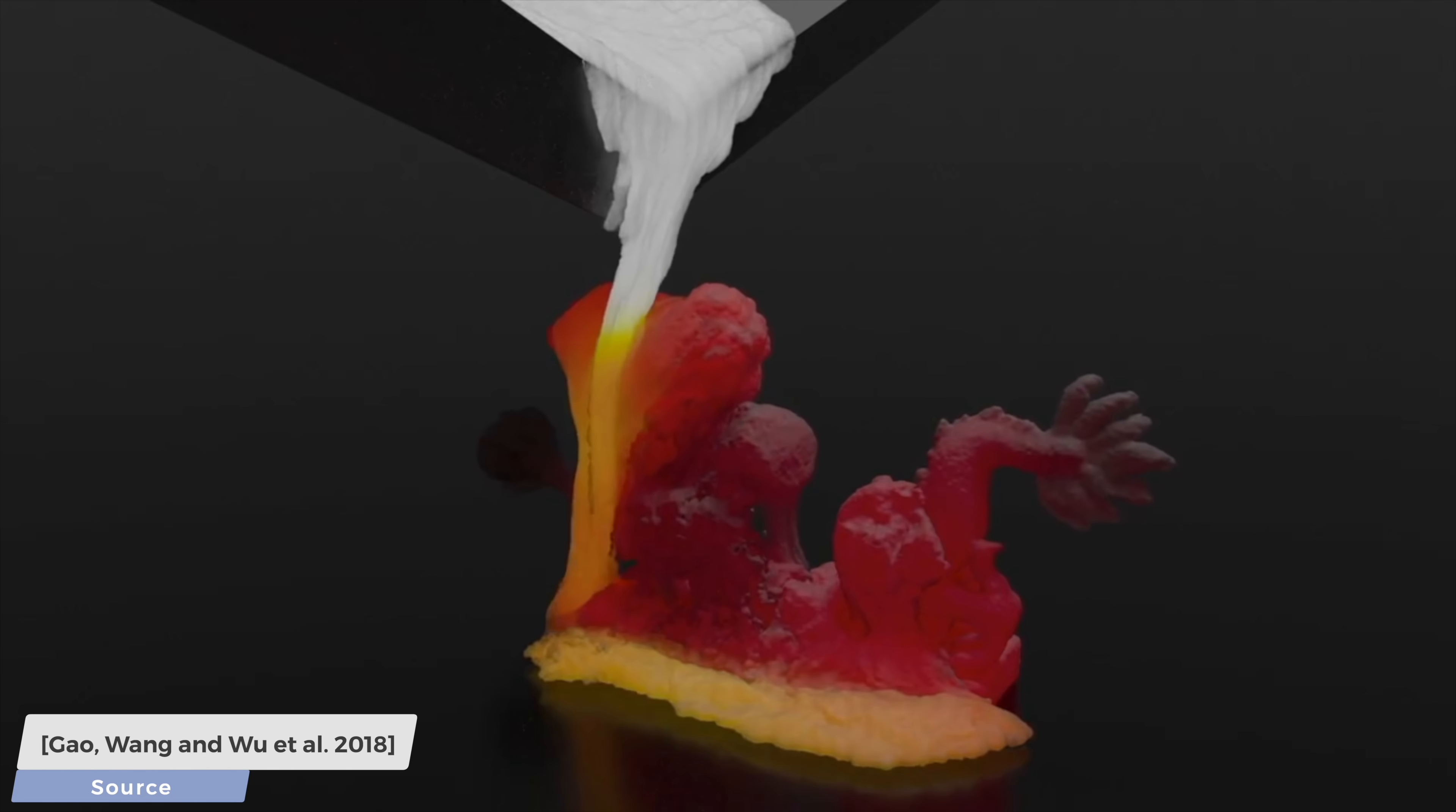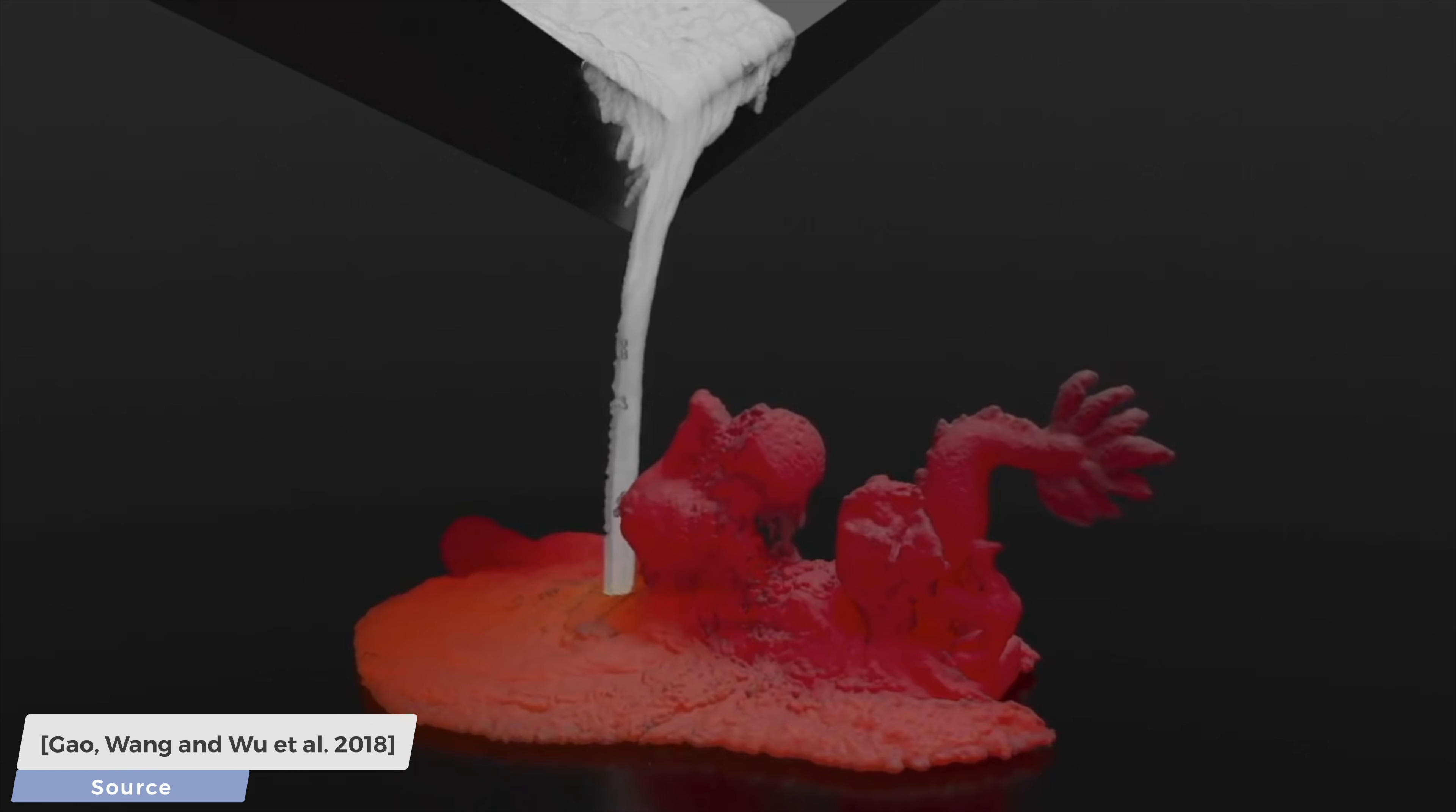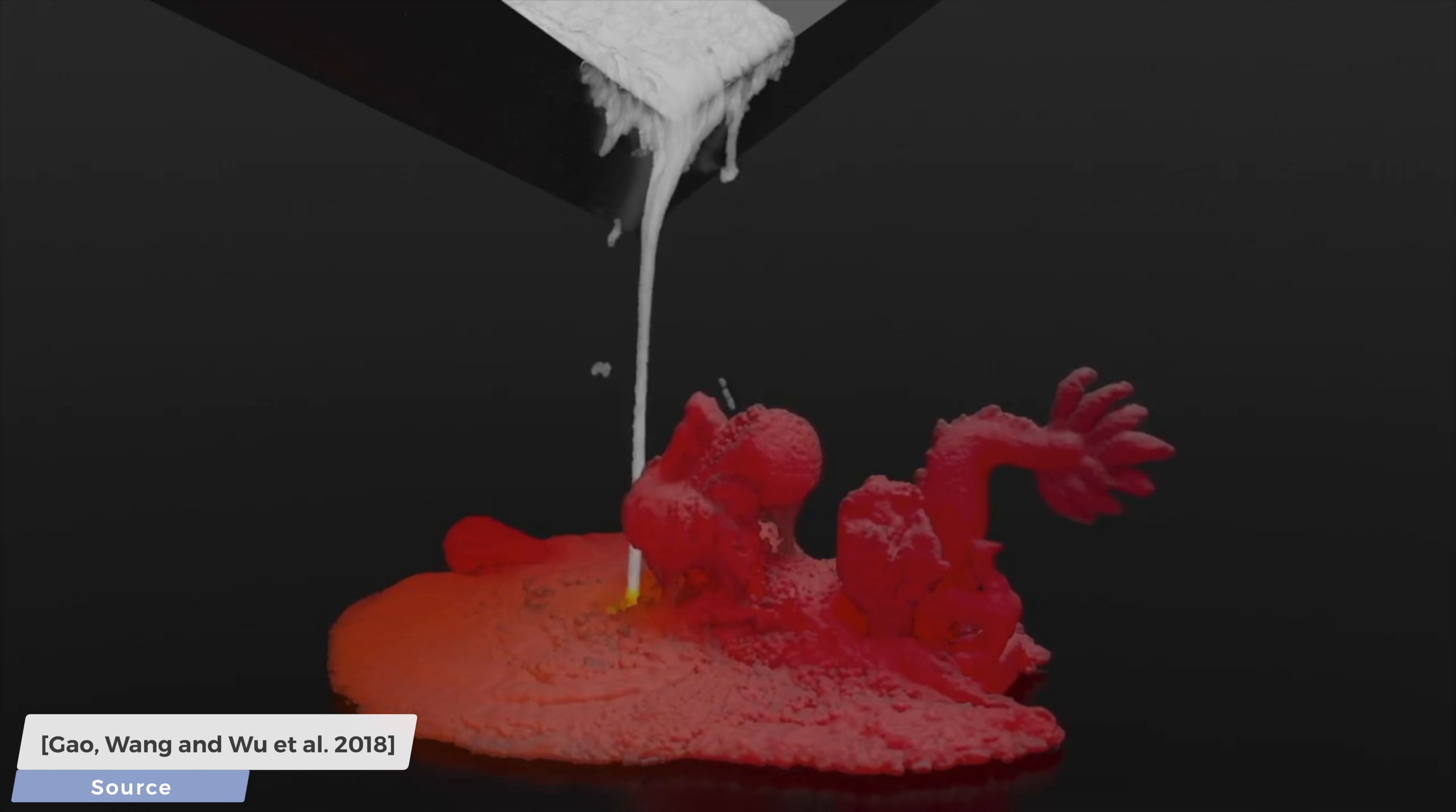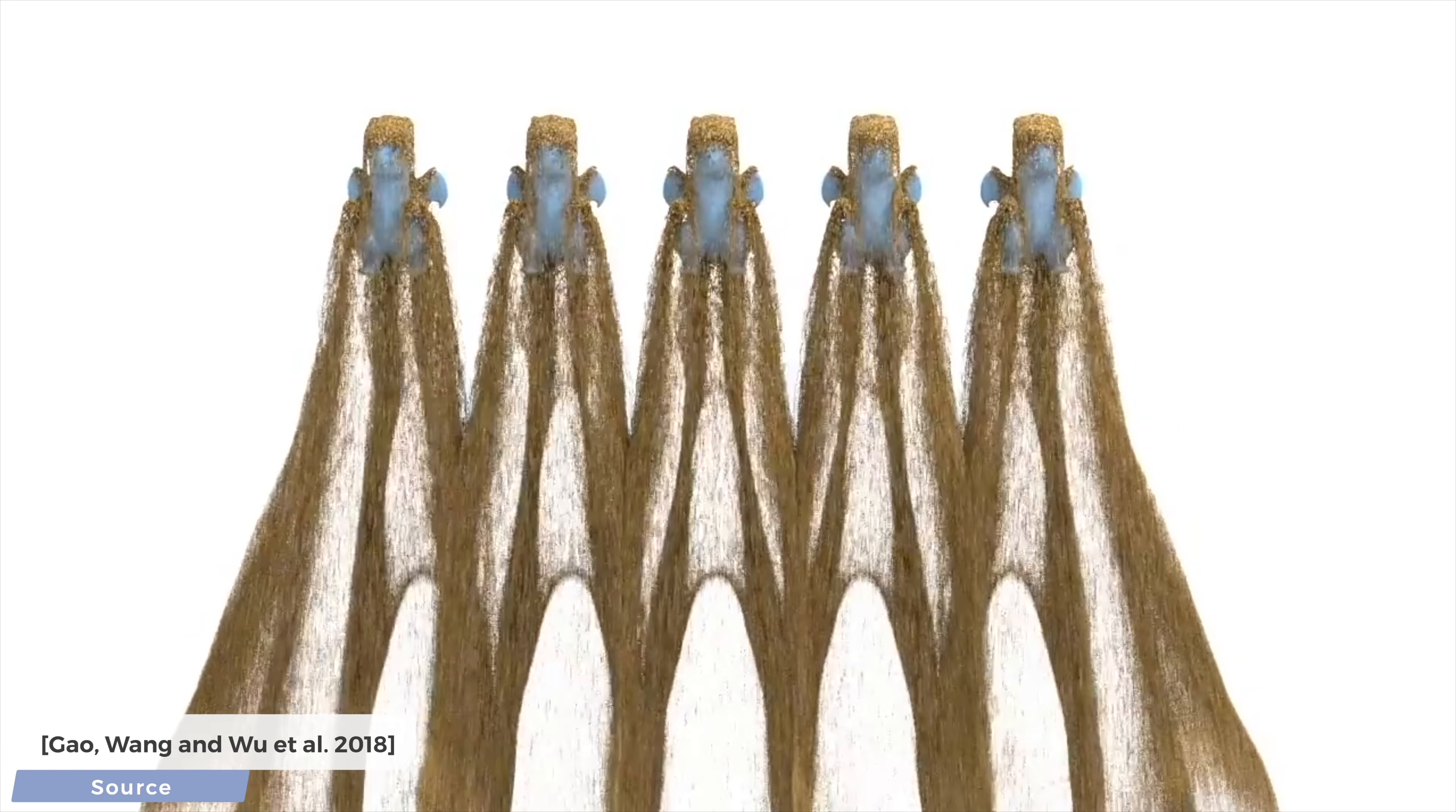These animations were created using the material point method, or MPM in short, which is a hybrid simulation method which is able to simulate not only substances like water and honey, but it can also simulate snow, granular solids, cloth, and many other amazing things that you see here.